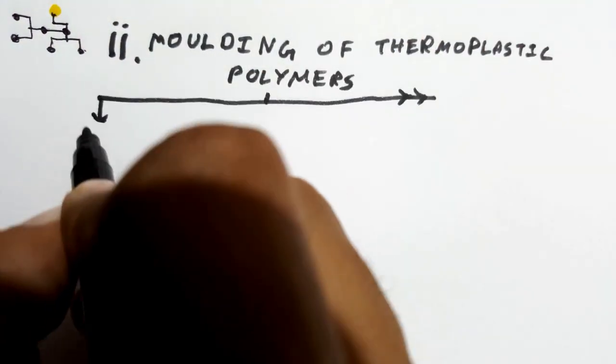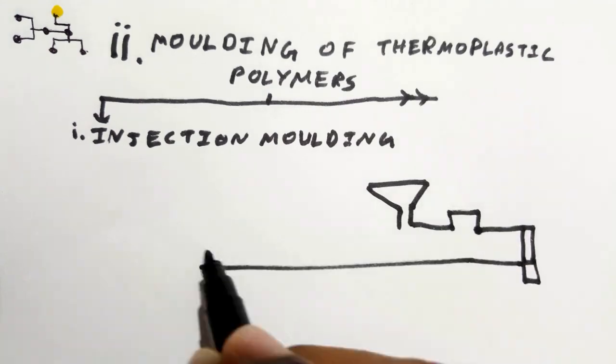Second comes moulding of thermoplastic polymers, which can be studied under three main parts.